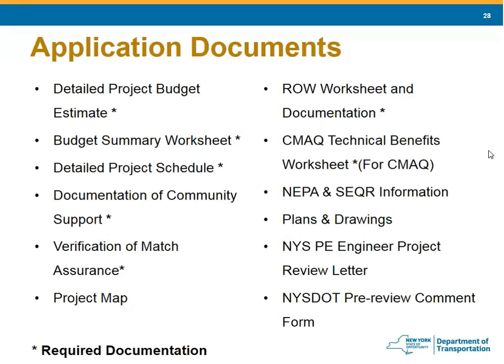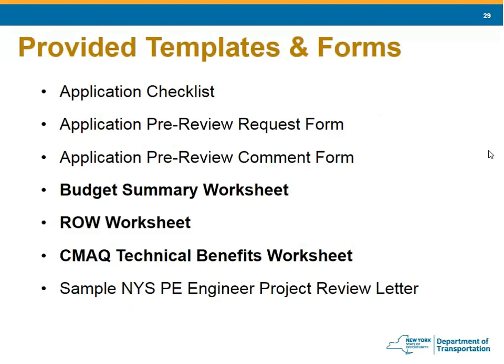Other documents needed to complete the application include: a detailed project budget estimate, the budget summary worksheet, detailed project schedule, documentation of community support, verification of match assurance, a project map, the right-of-way worksheet and documentation, the CMAQ technical benefits worksheet, NEPA or SEQR information, plans and drawings for the project, the New York State PE project review letter, and the NYSDOT pre-review comment form. Some of these documents you supply; others are provided in the Grants Gateway. Those with asterisks are provided in the gateway — the others can be located on the TAP-CMAQ website. Helpful checklists and required forms are in Appendix F — bolded items are in the Grants Gateway.